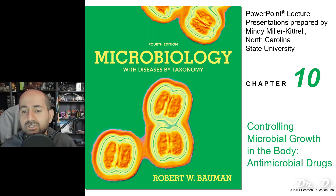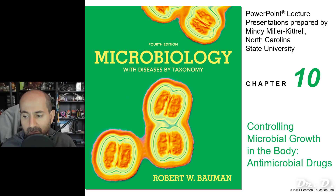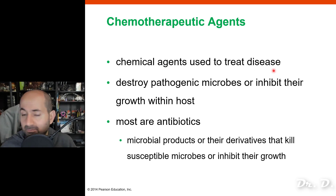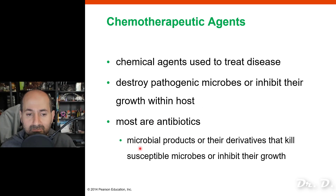This leads us to chapter 10: controlling microbial growth in the body — chemotherapy. Chemotherapeutic agents are chemical agents used to treat disease inside of the body. They destroy pathogenic microbes or inhibit their growth within the host. Most of the time we're dealing with antibiotics — microbial products or their derivatives that kill susceptible microbes or inhibit their growth within the body.